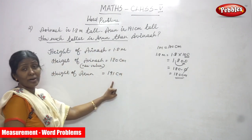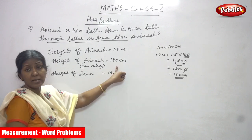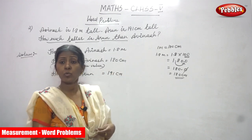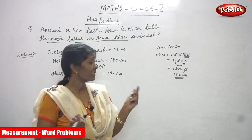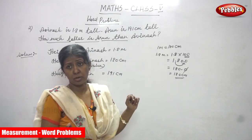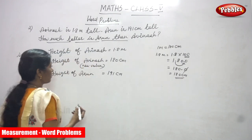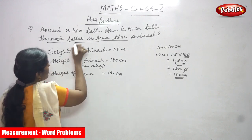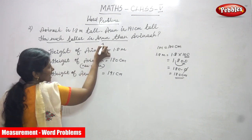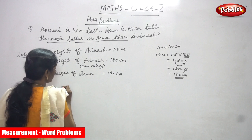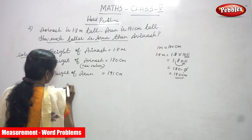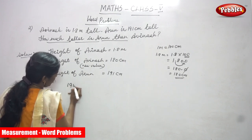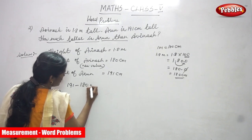Arun's height is 191 centimeters. Avinash's height is 180 centimeters. Who is taller? Arun is taller — you know that very clearly. So what you are going to do: you have to subtract. They are asking how much taller — how much taller is Arun than Avinash? You have to subtract 191 minus 180.